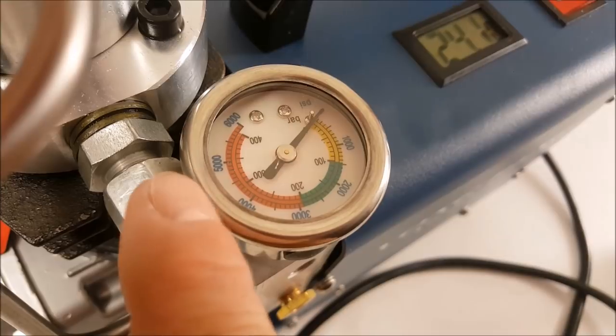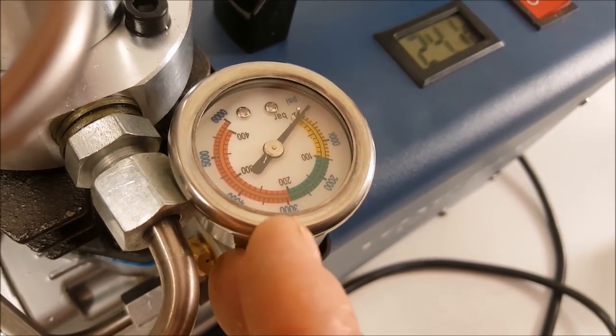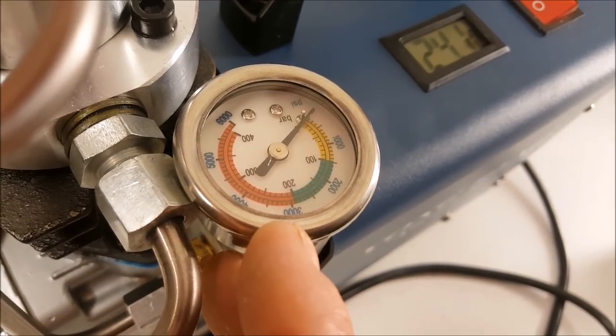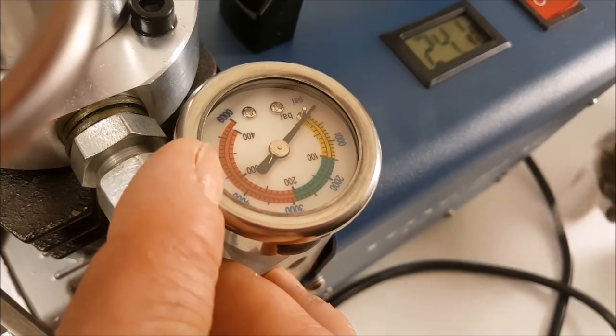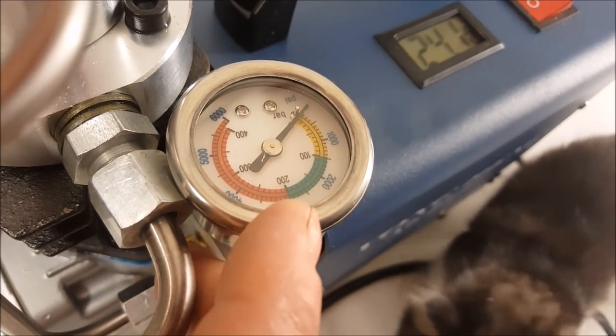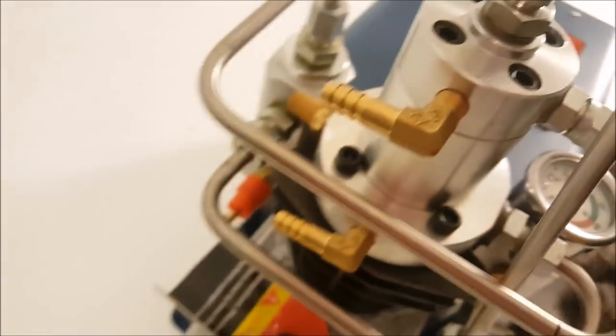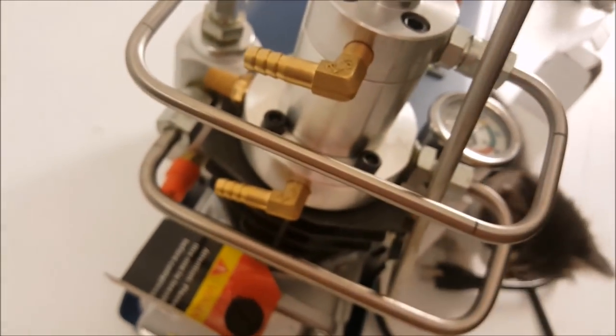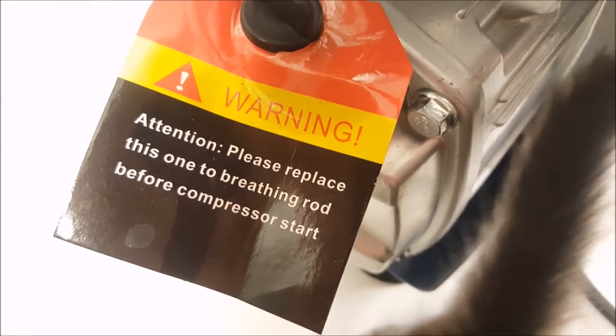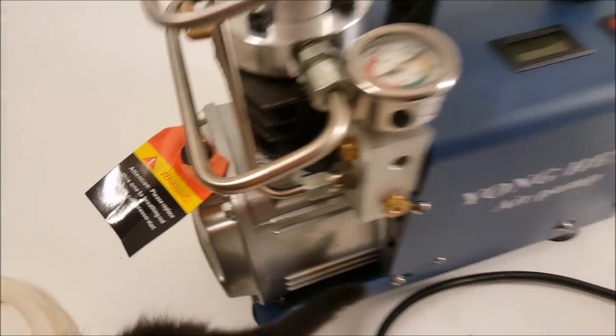We got a nice pressure gauge here that goes all the way up to 6,000 bar. Pretty awesome. But, it looks like you don't want to go past... Well, I'm sure you can use it into the red, apparently. But I don't know. We're going to try this out, and we'll see what happens to that pressure gauge. So, I just got to find out which of these is in and which is out. And then we got to figure out where to put the oil on here. Please replace the breathing rod before compressor start. So, definitely, I'm going to need to read the instructions on this.